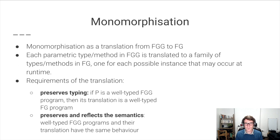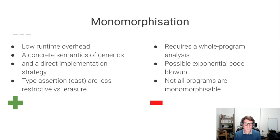The Go team was interested in monomorphization in the first instance because of its low runtime overhead. For us, it also gives us a concrete semantics for generics that we can explain to Go users, and a direct implementation strategy. Another bonus is that type assertion is less restrictive than with an erasure strategy. The downside of monomorphization is that it requires a whole program analysis, might lead to an exponential blowup of the code, and not all programs are monomorphizable.